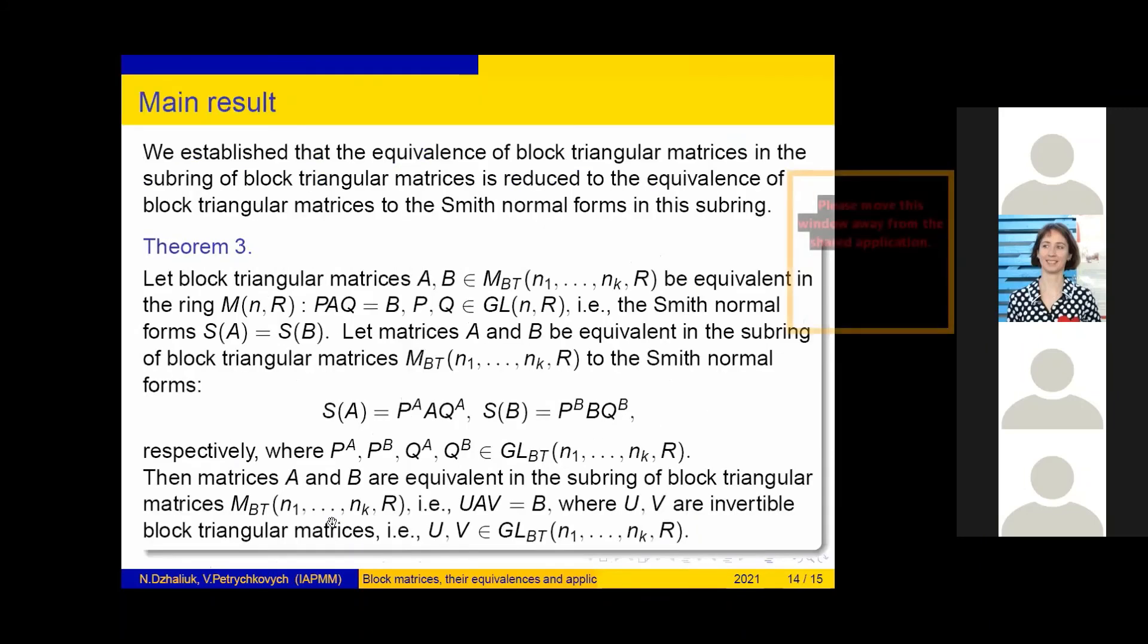The next result is Theorem 3. Let block triangular matrices A and B be equivalent in the ring M_n(R), that is PAQ = B, where P and Q are in the general linear group. So, the Smith normal form S(A) = S(B).